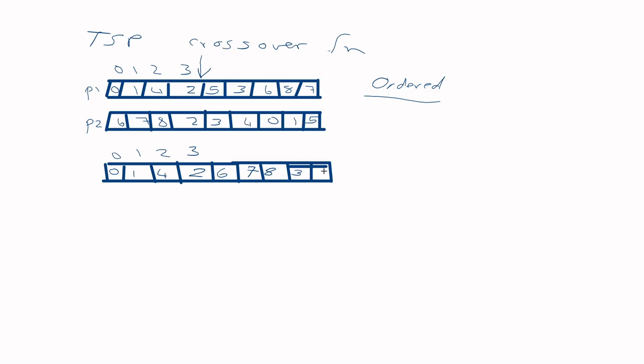You check each city in parent two: is six already there? No — add six. Is seven there? No — add seven. Is eight there? No — add it. Is two there? Yes, skip it. Is three there? No — add three. And so on, until all cities are included. This avoids duplicate cities in the offspring.